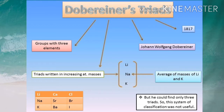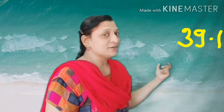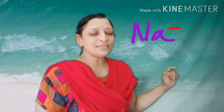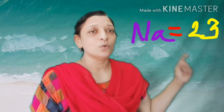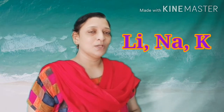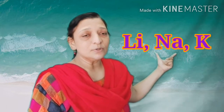Let us consider the examples from your textbook. Look at this chart. The first example is the group of lithium, sodium, and potassium. The atomic mass of lithium is 6.9 and that of potassium is 39.1. The mean of these two is (6.9 + 39.1) / 2 = 23, which is exactly the atomic mass of sodium, the middle element. This group is called Dobereiner's Triad.